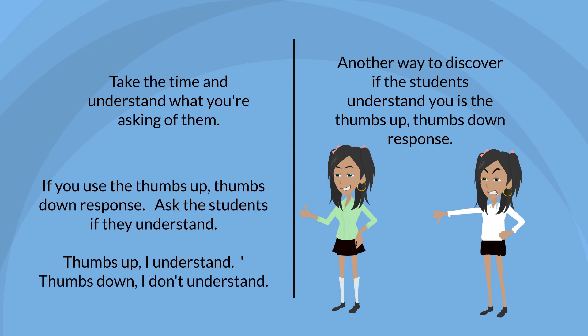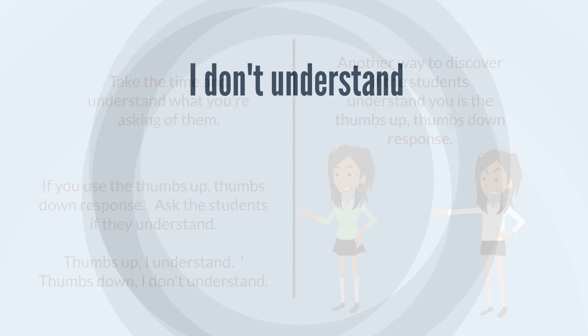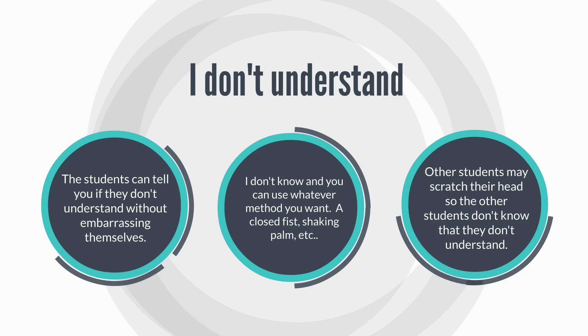Another way to discover if students understand you is the thumbs up/thumbs down response. Ask the students if they understand: thumbs up means 'I understand,' thumbs down means 'I don't understand.' In this way, students can tell you if they don't understand without embarrassing themselves. You can use whatever method you want — a closed fist, a shaking palm, etc. Other students may scratch their head so the other students don't know that they don't understand.